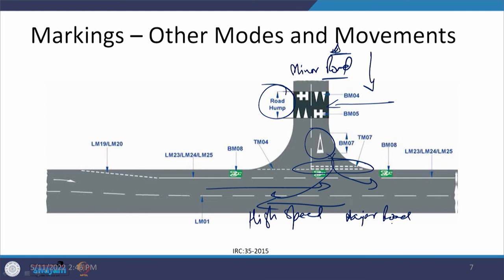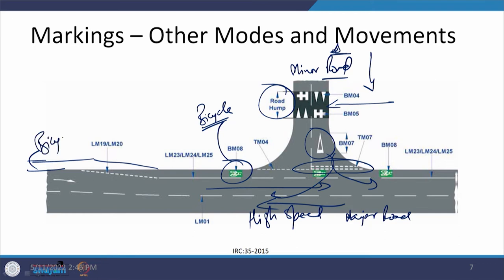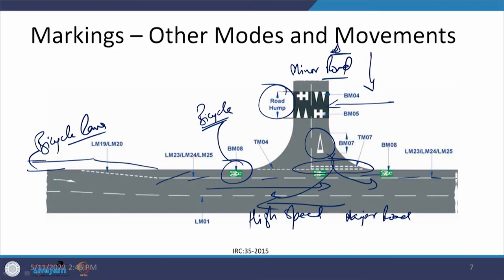One additional element visible here is a provision for bicycles. There is a bicycle path at the back end which merges at this location. A dedicated space has been arranged and marked on the pavement for use by bicyclists. The bicyclists can then exit the system. This is one way to provide crossing facilities for active transportation.